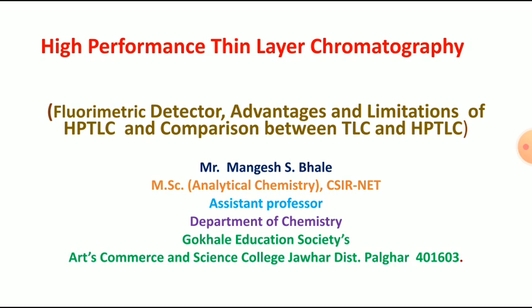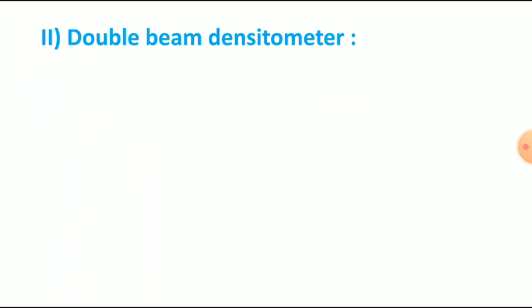In today's lecture, we are going to learn the double beam densitometer. In the single beam densitometer, we have seen all its components: radiation source, collimating lens, entrance slit, monochromator, converging lens, plate, and the detector — which we covered in the previous lecture. Today we will see the second type from the scanning densitometer, which is the double beam densitometer.